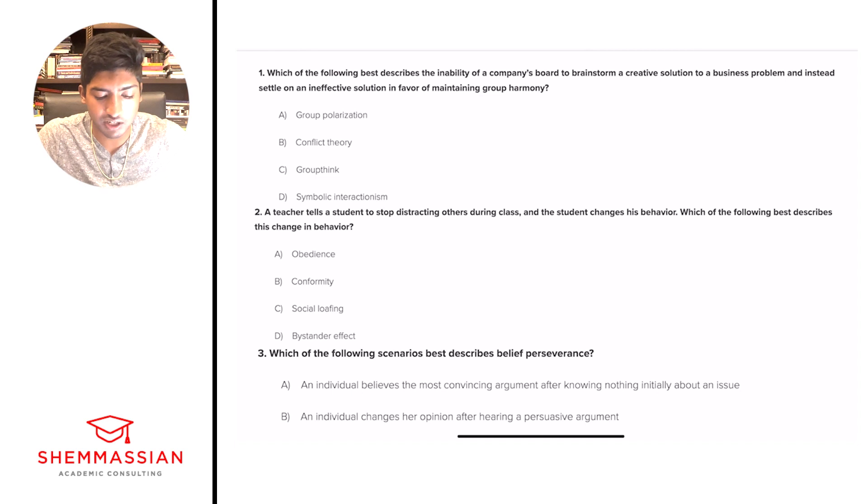Let's get right into question number one. Which of the following best describes the inability of a company's board to brainstorm a creative solution to a business problem and instead settle on an ineffective solution in favor of maintaining group harmony? Is it A, group polarization? B, conflict theory? C, groupthink? Or D, symbolic interactionism? For any psych-soc question, regardless of what it is, the question is going to have terms in the answer choices or in the question, and I need you to know the definition of these terms. The AAMC pulls from a pool of terms, and these terms will come up over and over again.